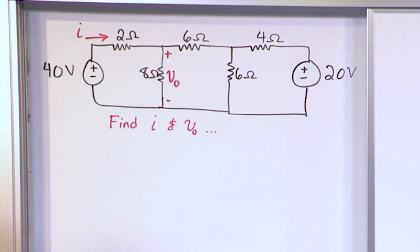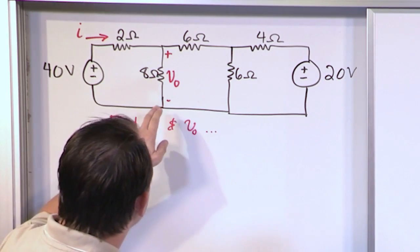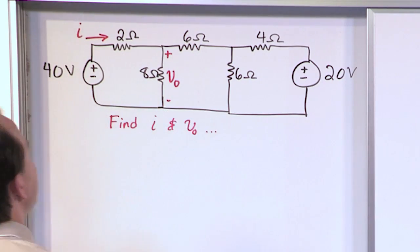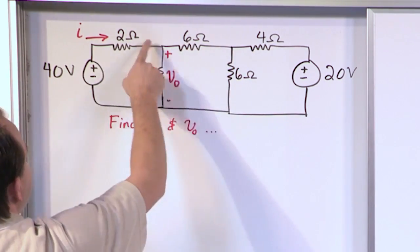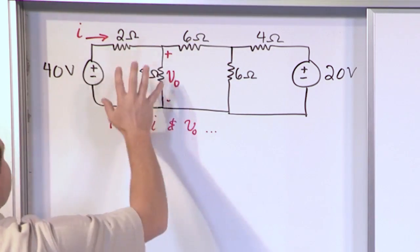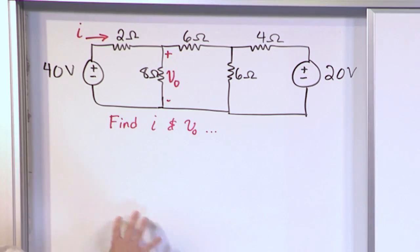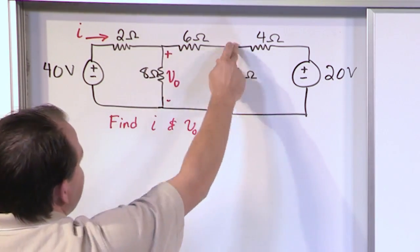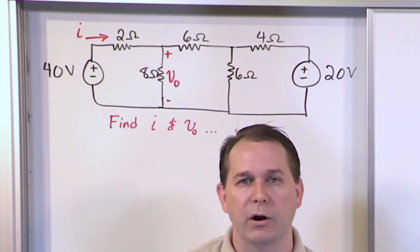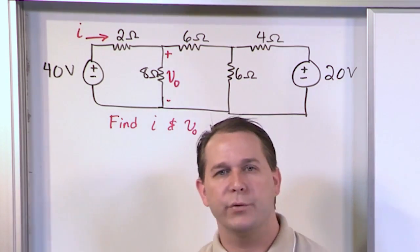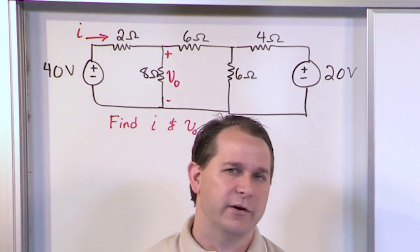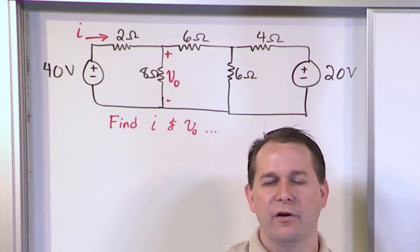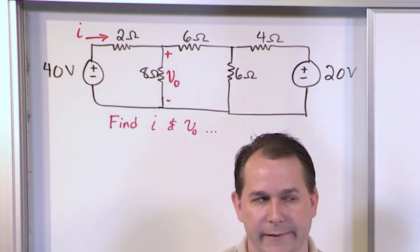Obviously you could use node voltage for this problem by selecting the bottom node as the reference, identifying essential nodes, and writing node voltage equations. But I want to point out that mesh current and node voltage are not exclusive — you can almost always solve every problem with either method. What you need to do for every mesh current problem is first identify what the meshes are.